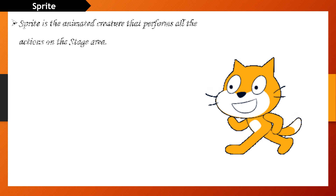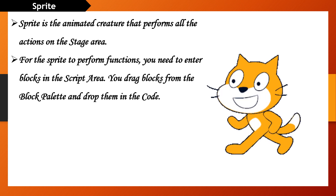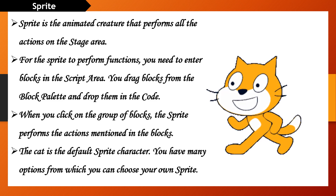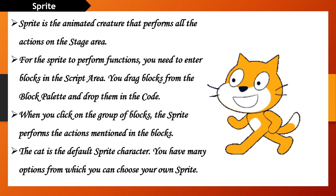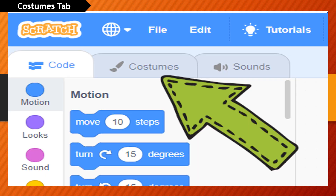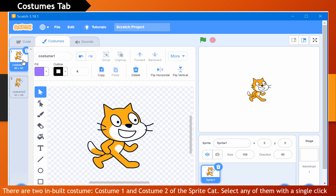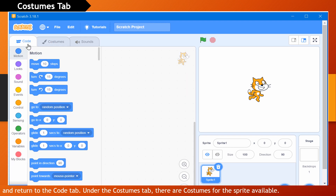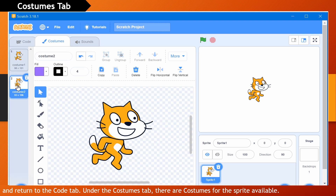Sprite is the animated creature that performs all the actions on the stage area. For the sprite to perform functions, you need to enter blocks in the script area. You drag blocks from the block palette and drop them in the code. When you click on the group of blocks, the sprite performs the actions mentioned in the blocks. The cat is the default sprite character. You have many options from which you can choose your own sprite. There are two inbuilt costumes — Costume 1 and Costume 2 of the sprite cat. Select any of them with a single click and return to the code tab.